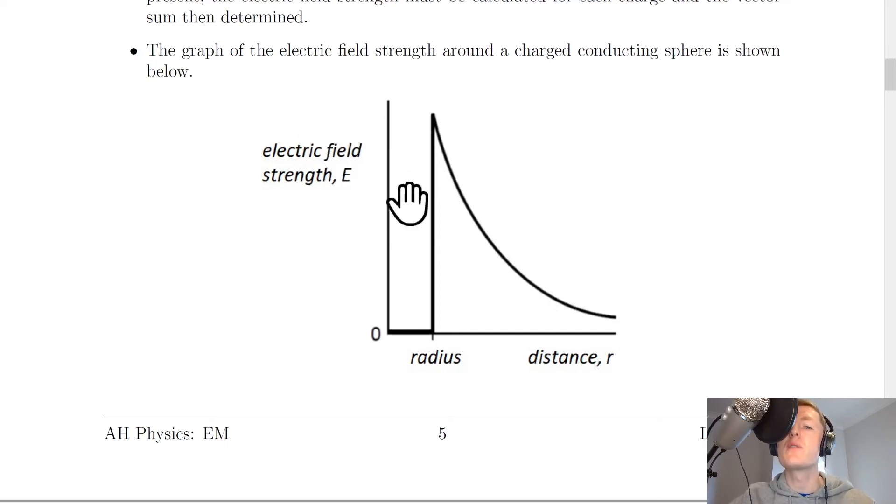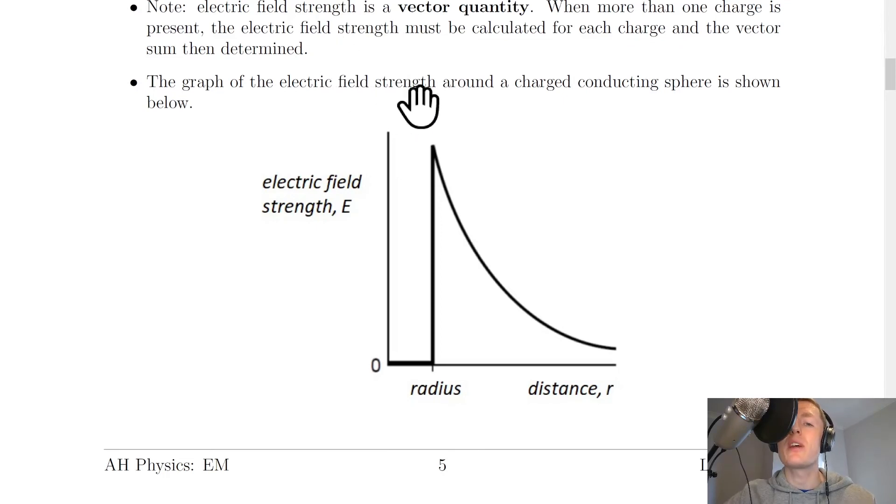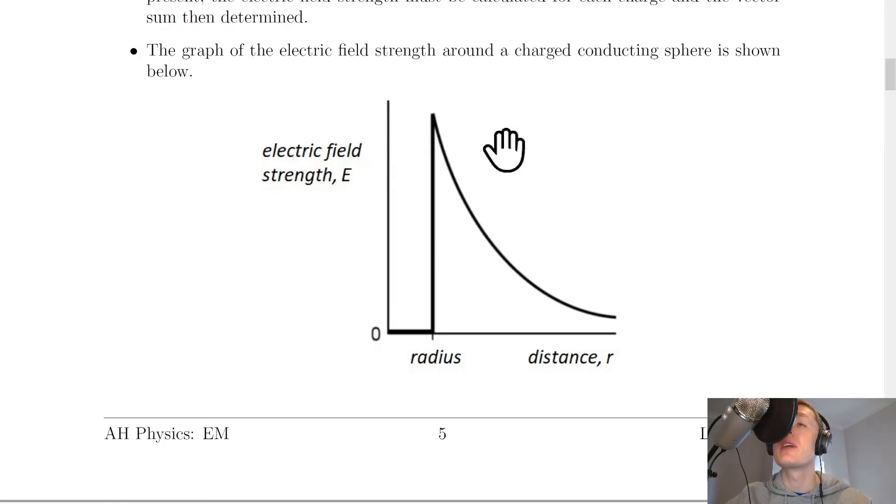We've got electric field strength E against the distance R away from the charge. Imagine a charge placed on top of the graph here, where the edge of the charge comes out to where the radius is. Inside the conducting sphere, we've got an electric field strength of zero. When we get to the radius, remember all the charge will reside on the surface of that conducting sphere. The electric field strength rapidly increases here, and then it's going to decrease with distance away from the surface. That is our inverse square law: E is proportional to 1 over R squared.